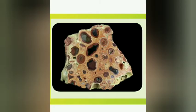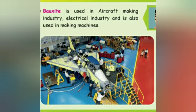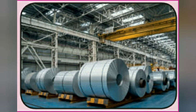Another useful mineral is bauxite, which is used to make aluminium. Aluminium is used in electronic devices, constructions, vehicles, and even in utensils — the vessels we use for cooking. Bauxite deposits are mainly found in the Shevaroy Hills of Salem district in Tamil Nadu. Bauxite is used in the aircraft industry, electrical industry, and for making machines in large quantities. It is also used in making paper, purifying water, and refining petroleum.